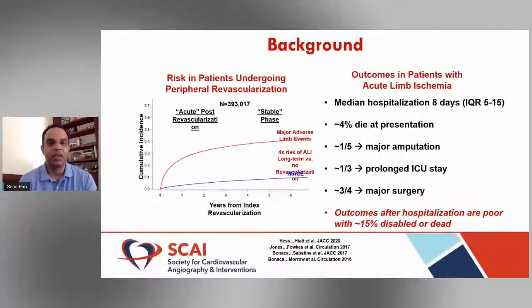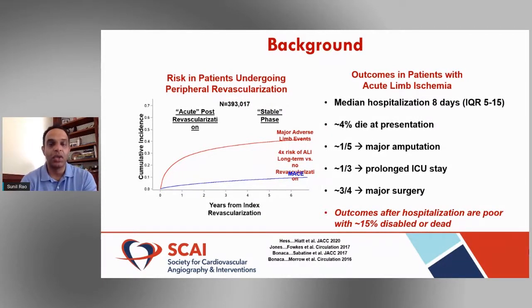The question after lower extremity revascularization is: how do we reduce this patient's long-term risk of major adverse cardiac events — MACE — and major adverse limb events, or MALE? MALE may be a term you're not familiar with, but it's becoming very important when thinking about limb events in peripheral arterial disease. This is where the VOYAGER PAD trial comes in, presented at the ACC and published simultaneously in the New England Journal.